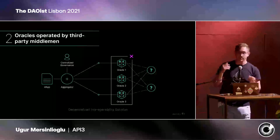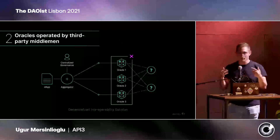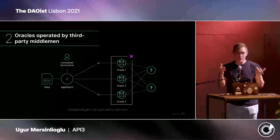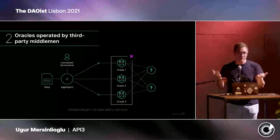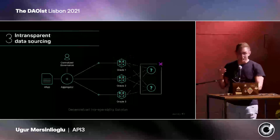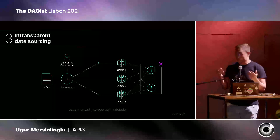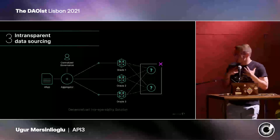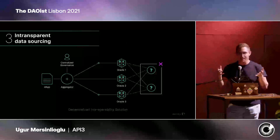The second issue is that the majority of Oracle nodes are not actually run by the actual data source. If you look at a stock exchange, it's not the stock exchange providing you on-chain with the data they produce — it's actually somebody else telling you what the data is. And finally, these third-party Oracles are also not transparent about where they get their data from. How can we as consumers tell that all three nodes are not getting their data from the same source, since they're not being transparent about it?